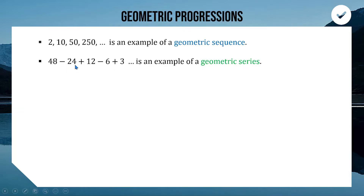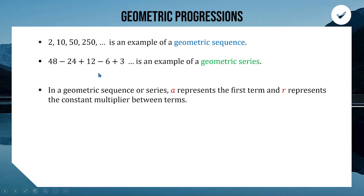Multiplied by negative one-half again and you get positive 12. Sometimes if it's too hard to see what your multiplier is, you can work backwards and do negative 24 divided by 48 to get minus one-half. Just like in arithmetic sequences, we represent the first term with a, however instead of d being our common difference, we use r to represent our common ratio — or the consistent multiplier between terms.